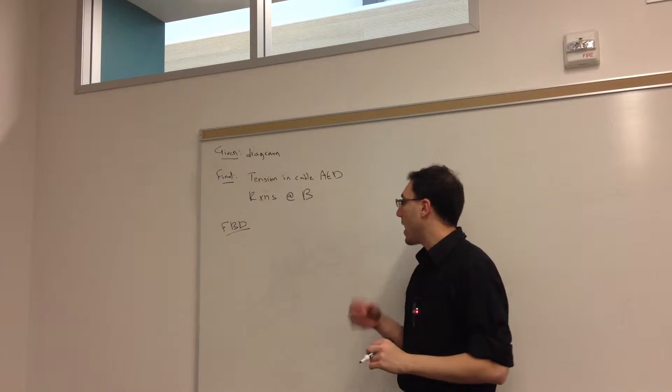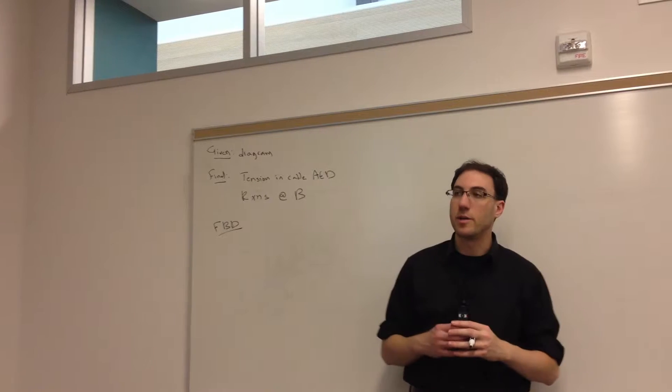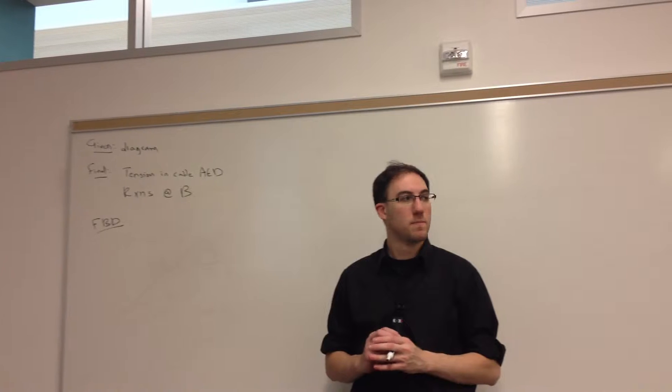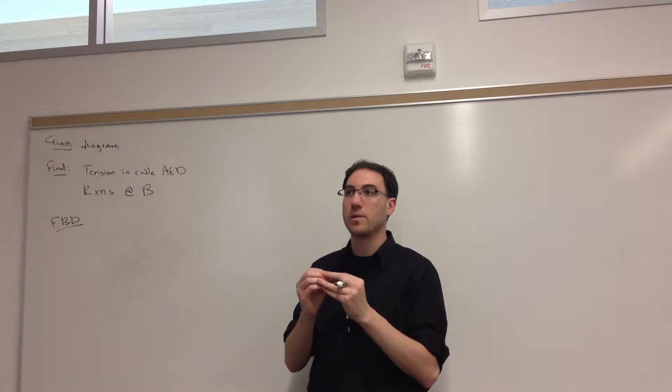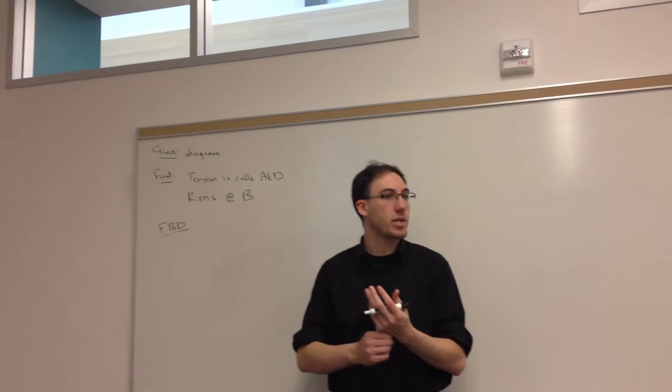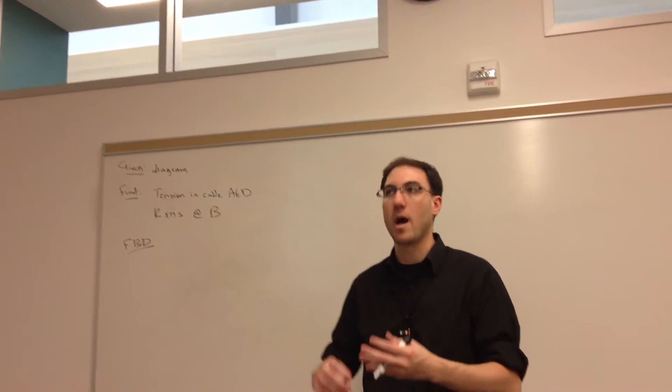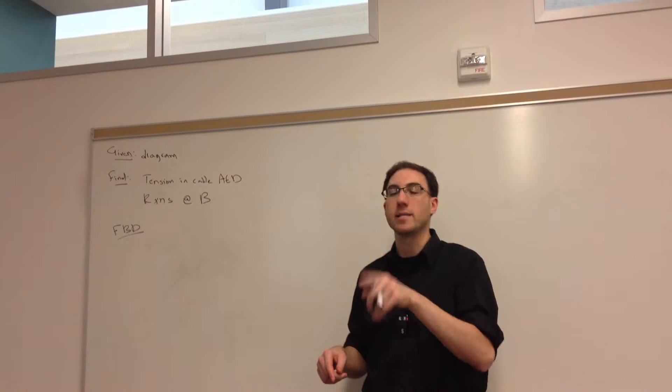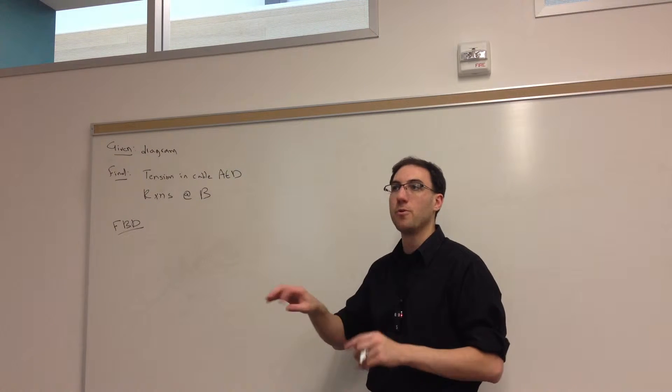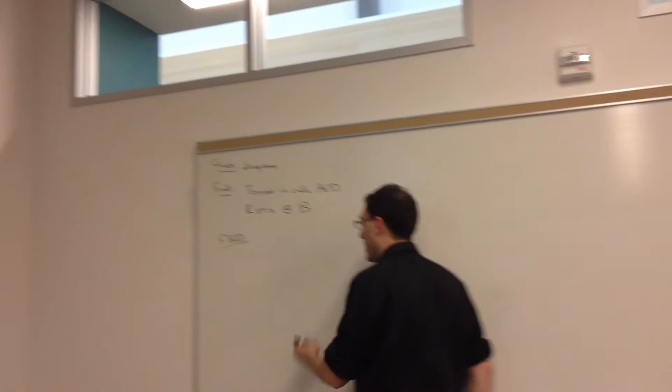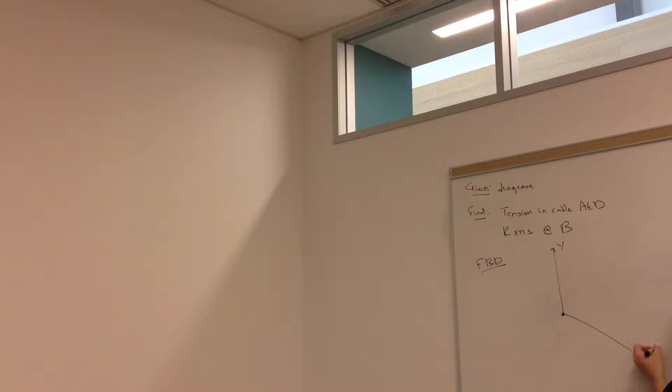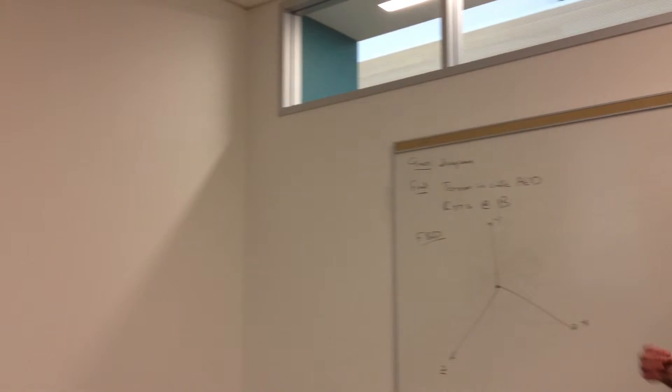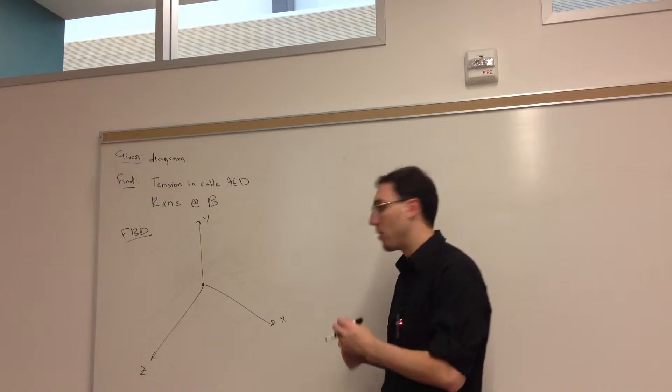So the free body diagram - what is the object we're going to isolate from all of its connections so that we can find the reaction at B and the tension in the cable? Right, so this L-shaped bracket and the collar it's welded to is what we're going to isolate. We're not including the shaft, that vertical shaft in the Y direction. We're not including the pulley or the rope from A to E to D.